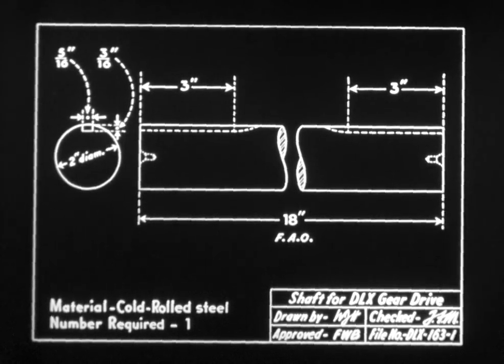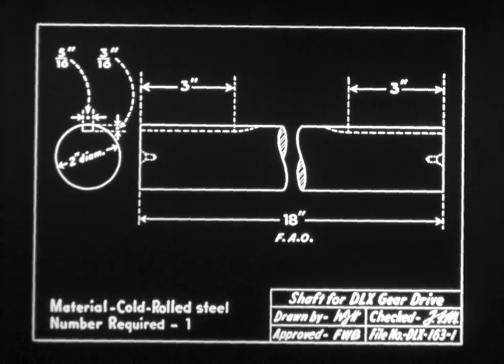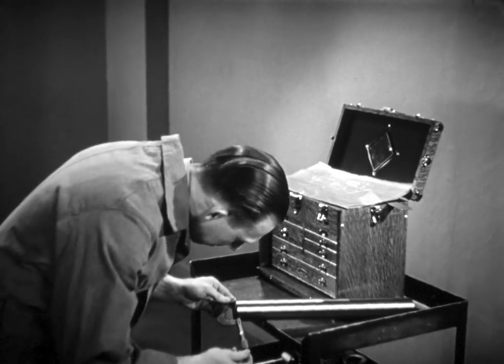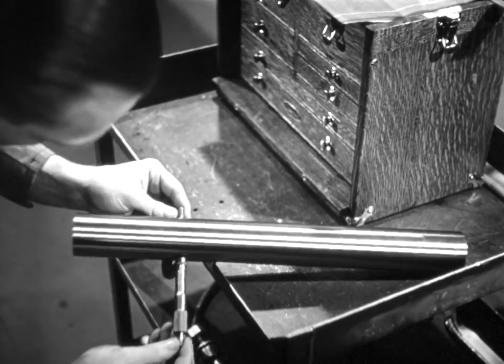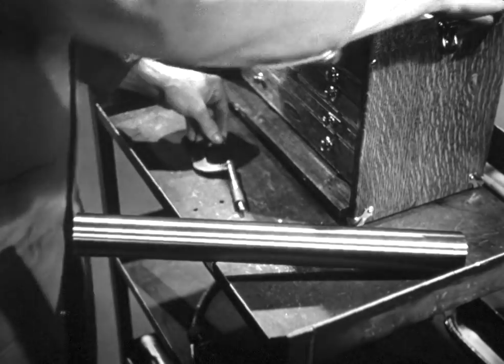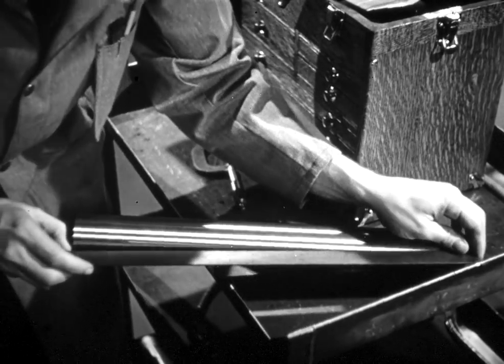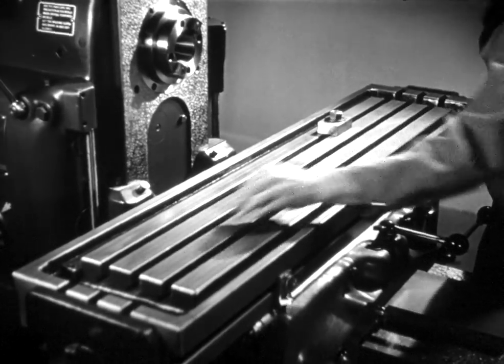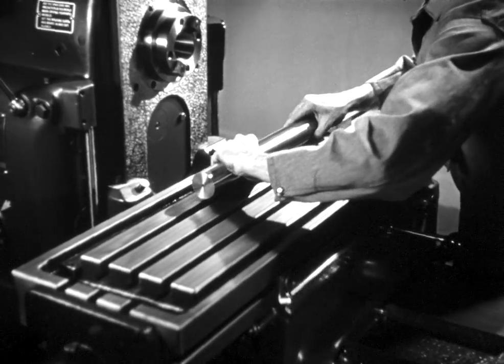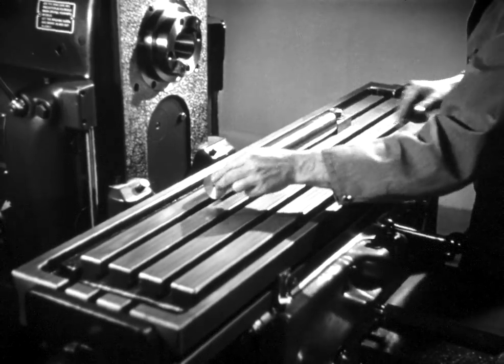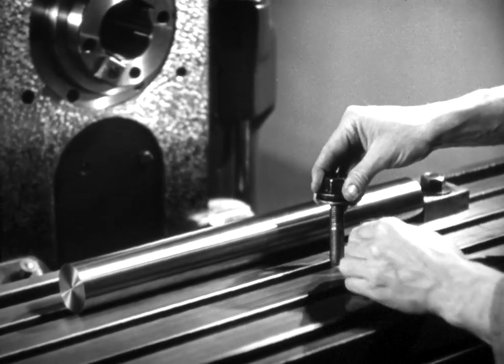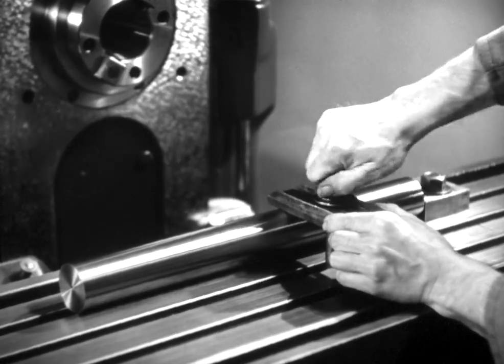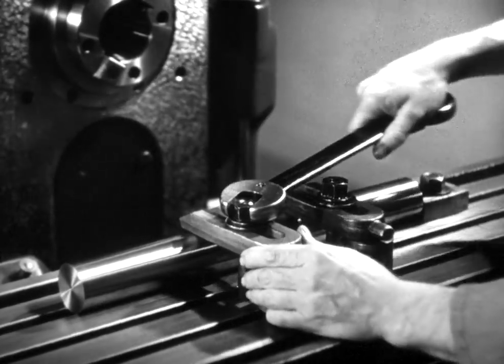The job starts with a blueprint, which shows that in this instance, a five-sixteenths by three-sixteenths by three-inch keyway is to be cut in each end of a two-inch shaft. First, the operator checks the shaft to make certain that it is the right piece for the job. The table must always be clean and free of burrs. The shaft is clamped securely to the table in the slot nearest the head of the machine. This is the simplest way to hold the work for this type of job.